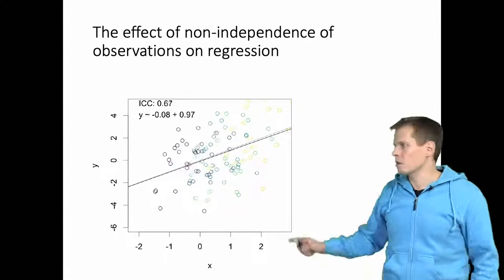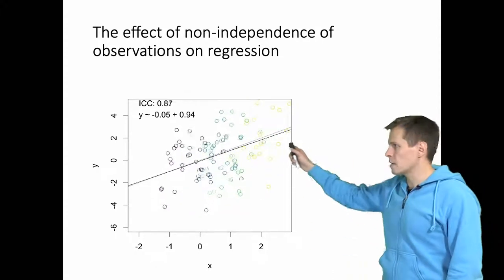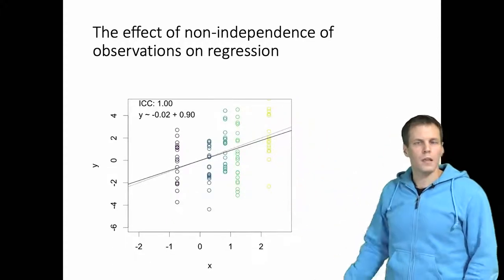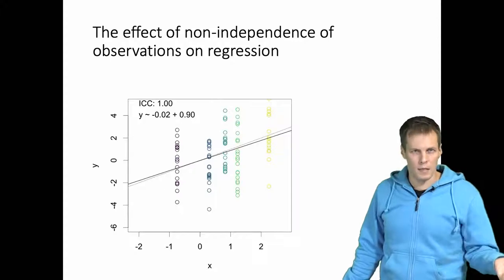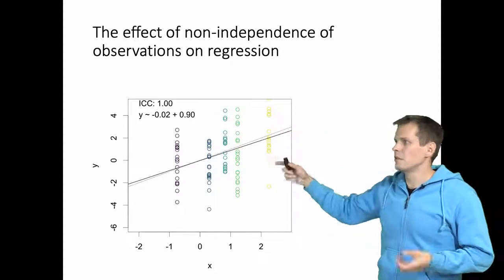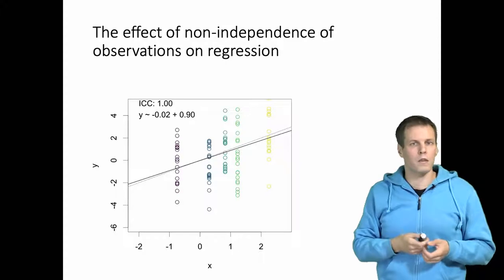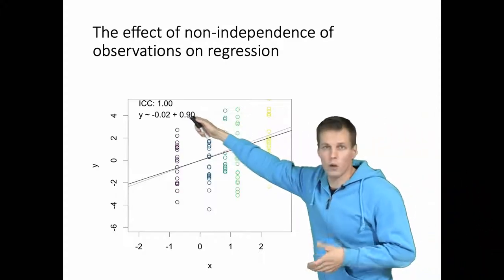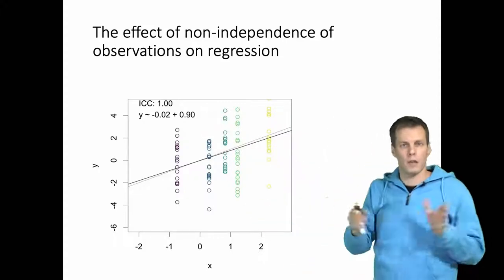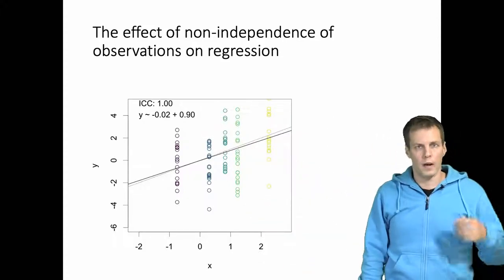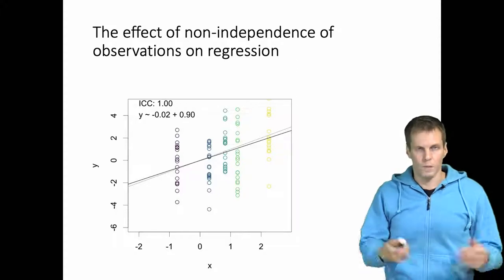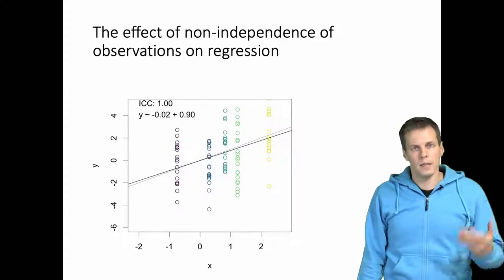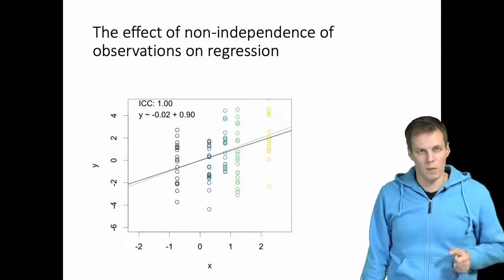We can see the intraclass correlation increases — the data becomes more and more clustered until we have just five values. In this case, when X is clustered but the error term is not, the clustering actually doesn't have an effect. The regression intercept and slope will differ slightly as clustering changes, but that's just sampling variation — there is no systematic deterioration in the estimates as intraclass correlation increases.